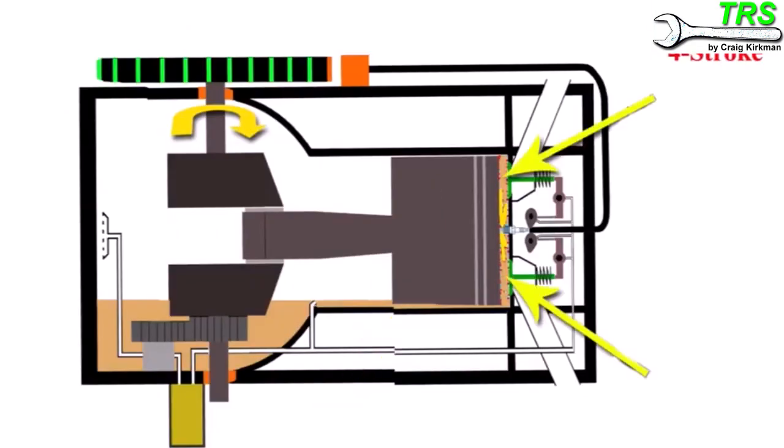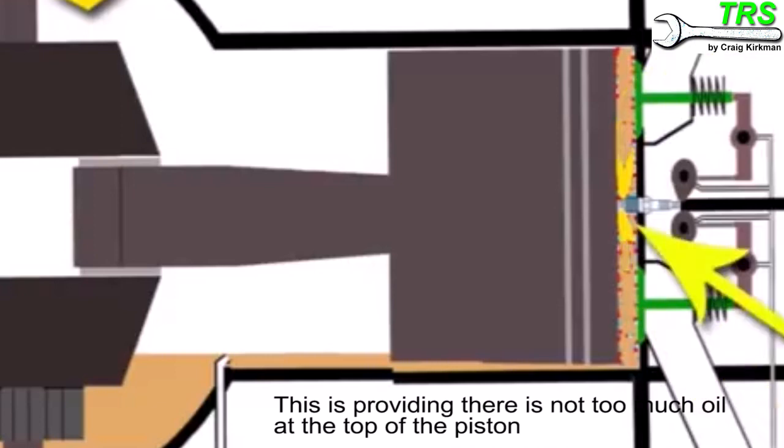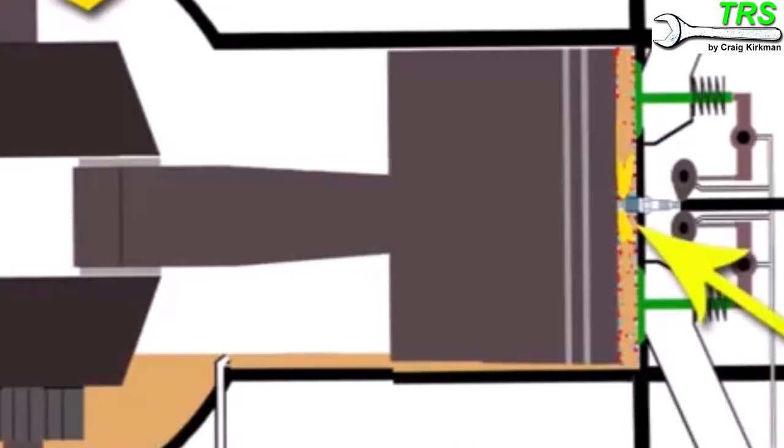And when the piston gets to top dead center on the power stroke where it should be compressing just air and fuel, it's also trying to compress all of that oil. And that's causing problems now with combustion. Because when the spark plug fires, instead of it igniting that rich mixture of air and fuel in order for a great combustion in there to allow the piston to be pushed back down,